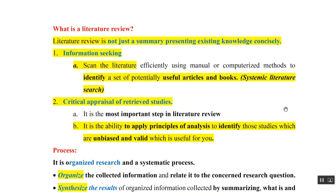So what is a literature review? Literature review is not just a summary presenting existing knowledge concisely. It basically consists of two things. First is information seeking and second is critical appraisal of identified studies. Information seeking is basically scanning all available literature — either manually or using a computerized method — to identify which articles and books are actually useful for our study. This is known as a systematic literature search.